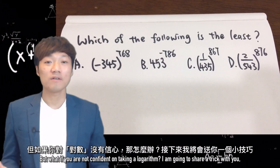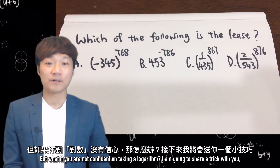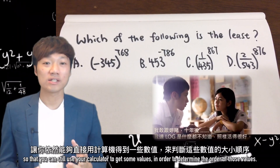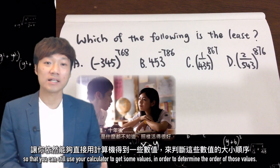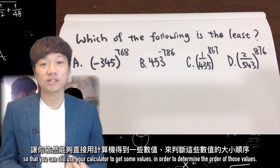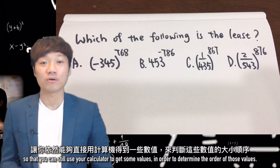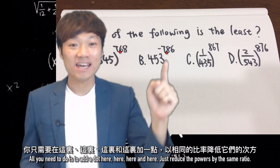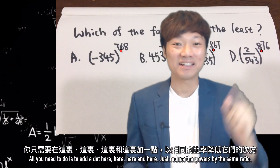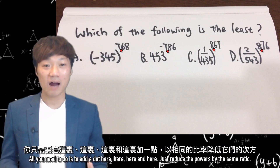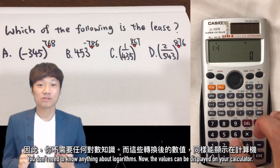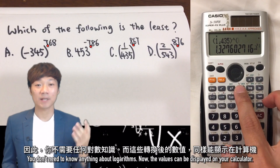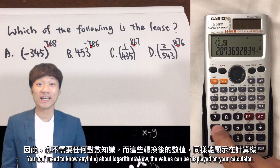But what if you are not confident on taking a logarithm? I'm going to share a trick with you, so that you can still use your calculator to get some values in order to determine the order of those values. All you need to do is to add a dot here, here, here, and here — just reduce the powers by the same ratio. You don't need to know anything about logarithm. Now the values can be displayed on your calculator screen.